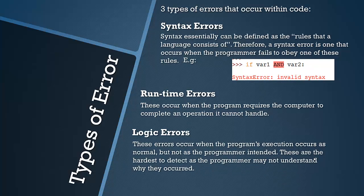Logic errors are the hardest to eradicate and fix because they occur when execution occurs as normal but not as the programmer intended — meaning the code works but didn't work as expected, perhaps because the programmer didn't fully understand what they were doing. These are the hardest to detect because you may not understand why they occurred in the first place. But there is a means to eradicate these and we'll look at that a bit later.